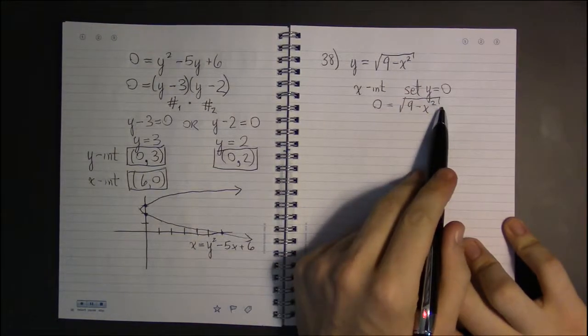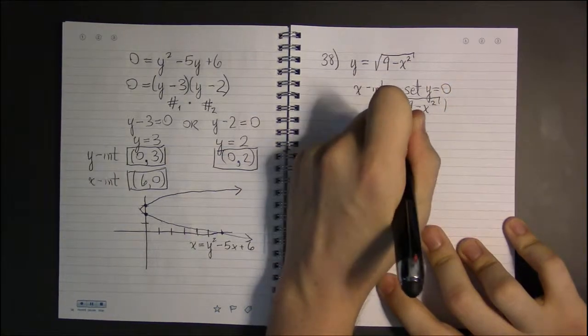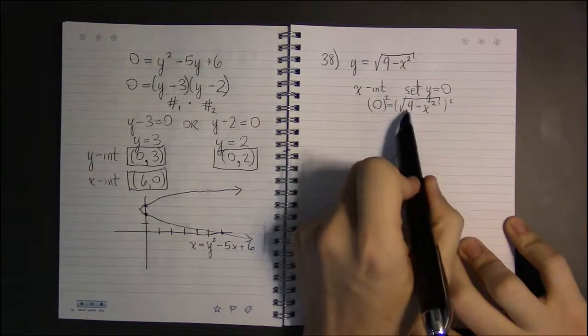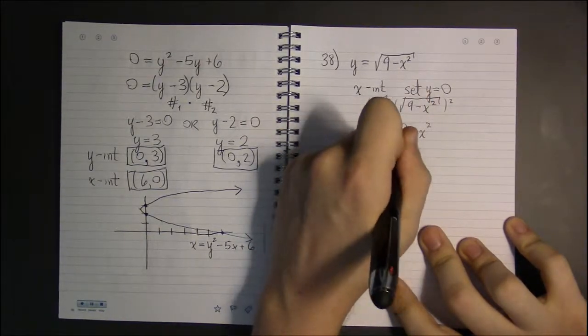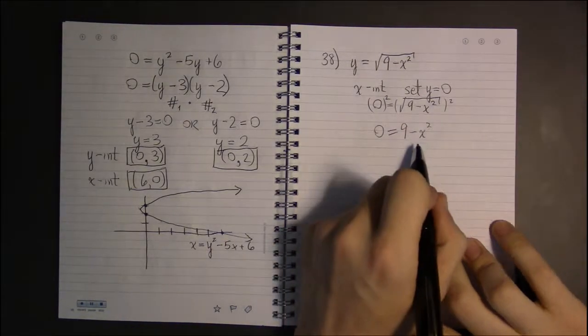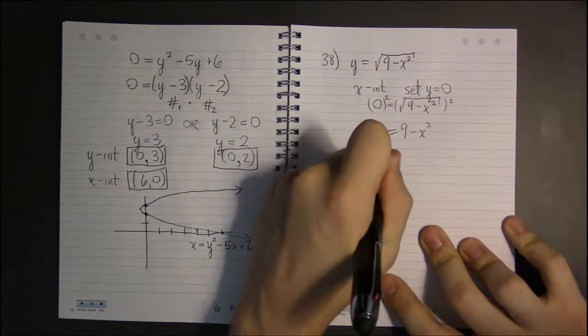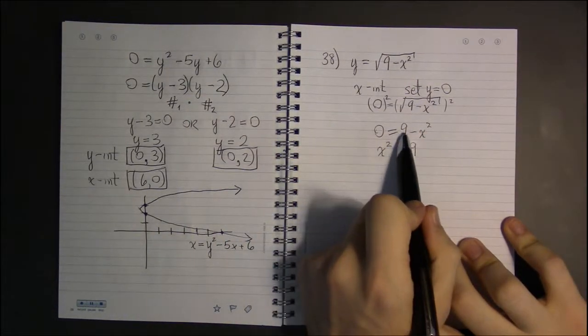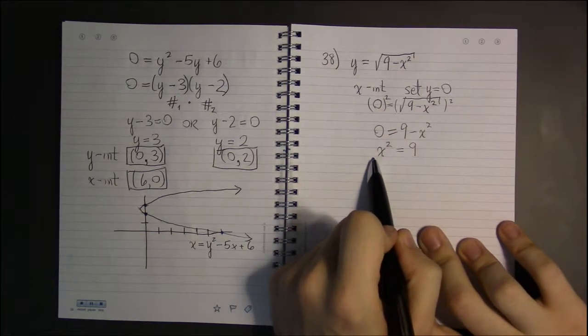The first thing I want to do is get rid of the square root, because that's pretty nasty. So if I square both sides, that'll have the effect of getting rid of the square root here. And 0 squared is just 0. So now I can add x squared to both sides, because I don't like negatives. I'd rather see positives. If I add x squared to both sides, on the right I just have 9. And on the left, I'm going to have x squared.